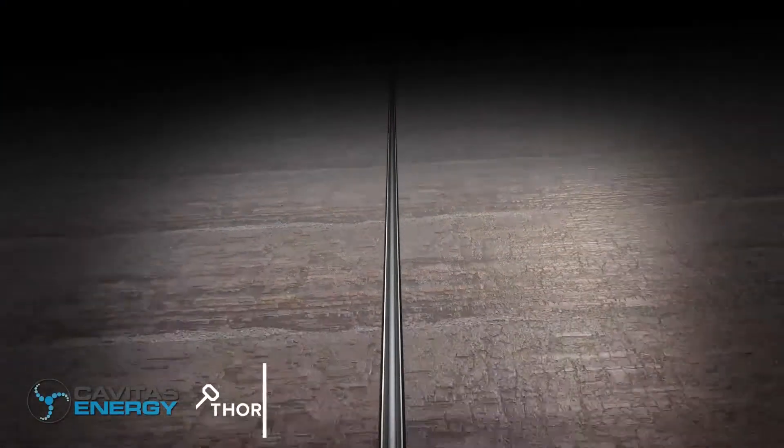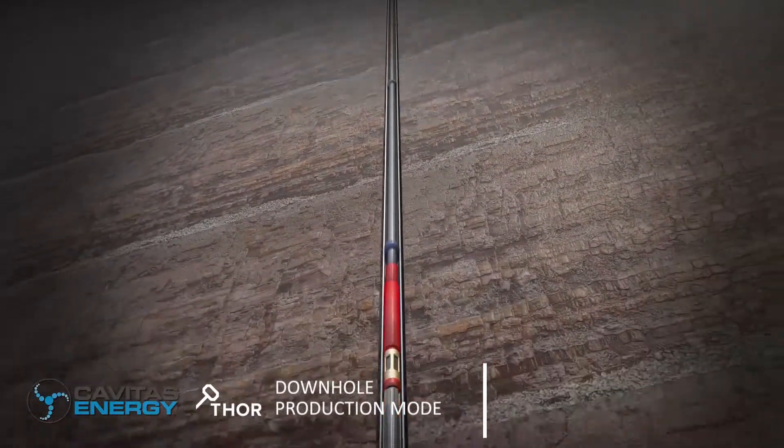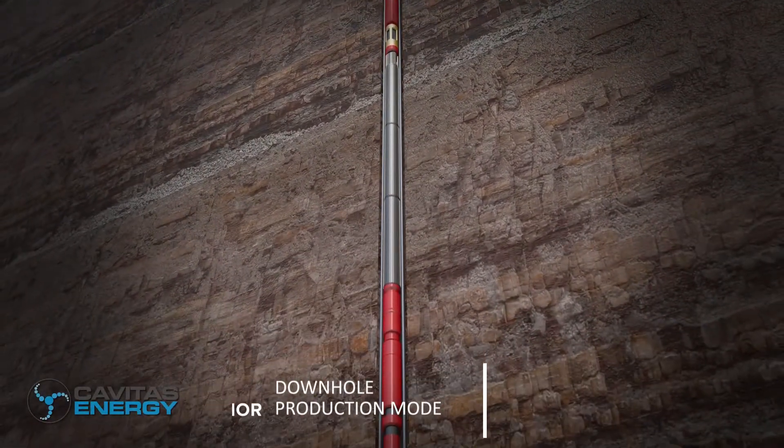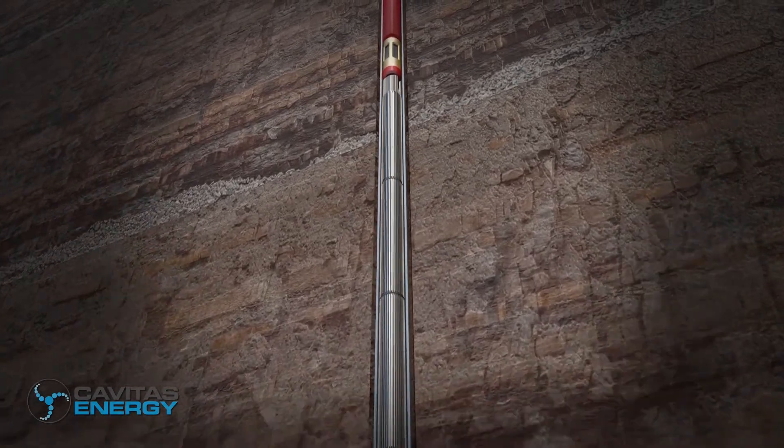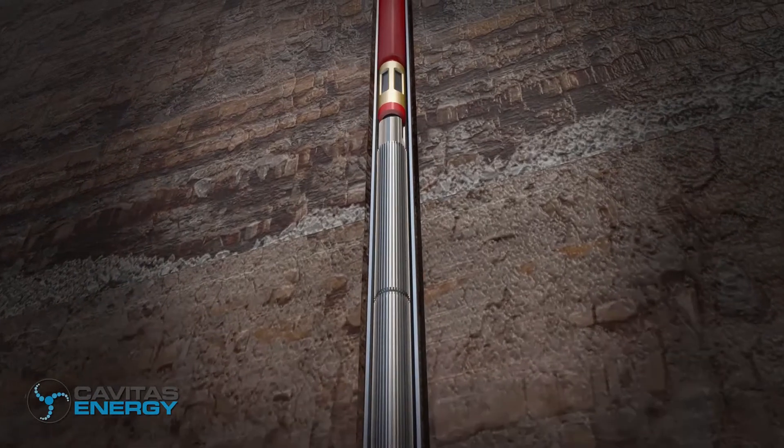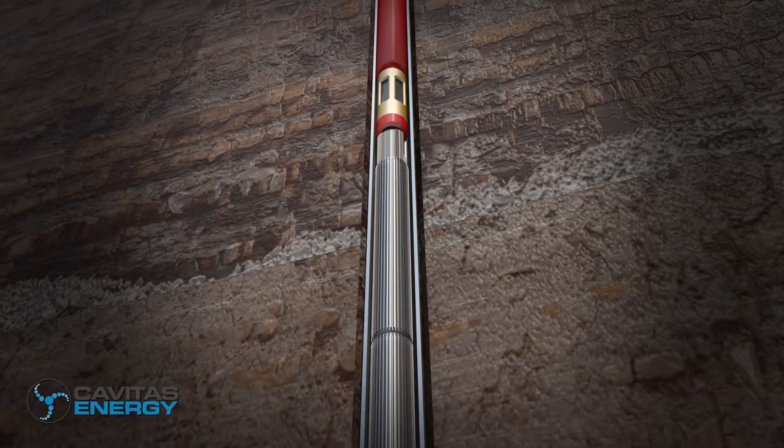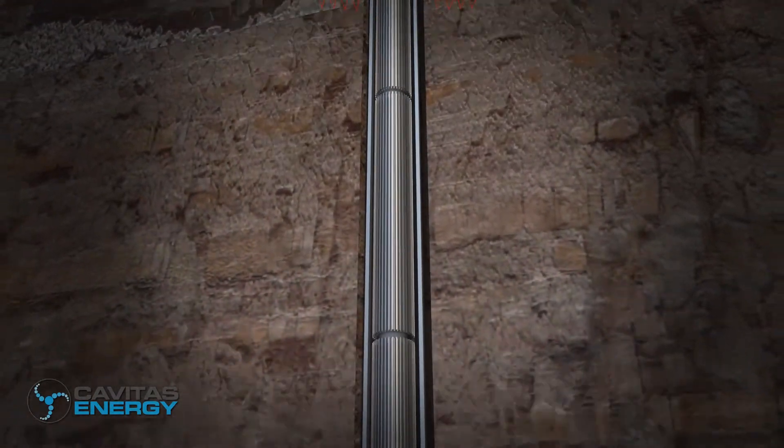Cavitas THOR technology can also be deployed in production wells. In this scenario, THOR would sit within the completion directly below the artificial lift system. THOR could draw rotational power directly from the downhole artificial lift system or be independently powered as required.